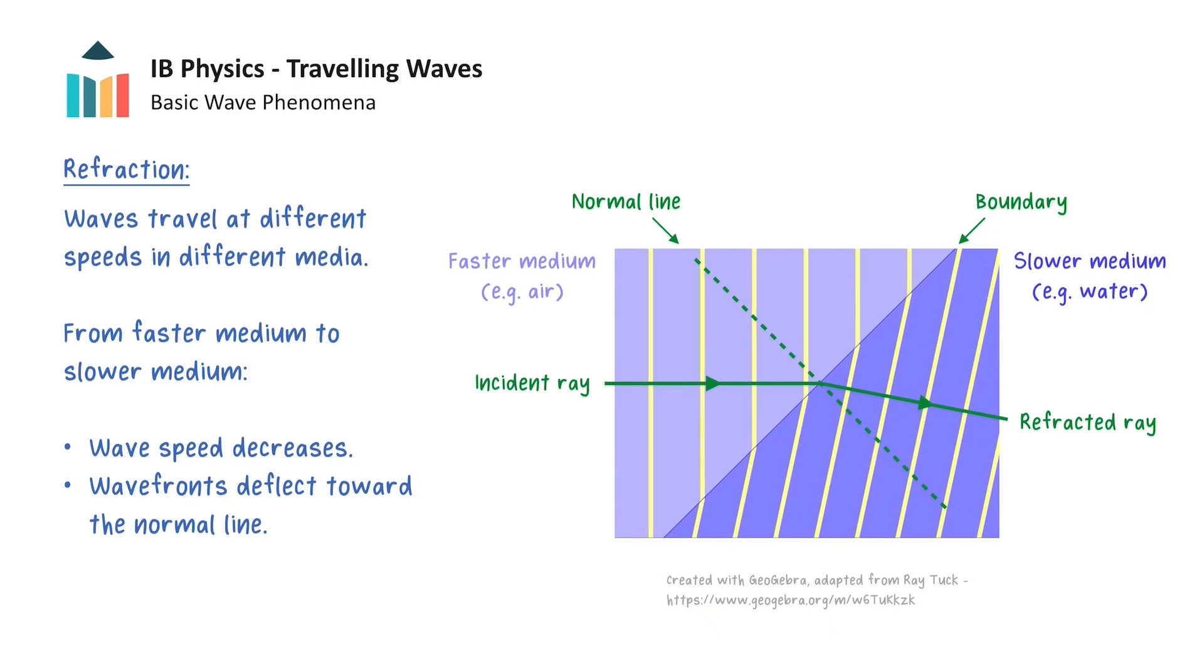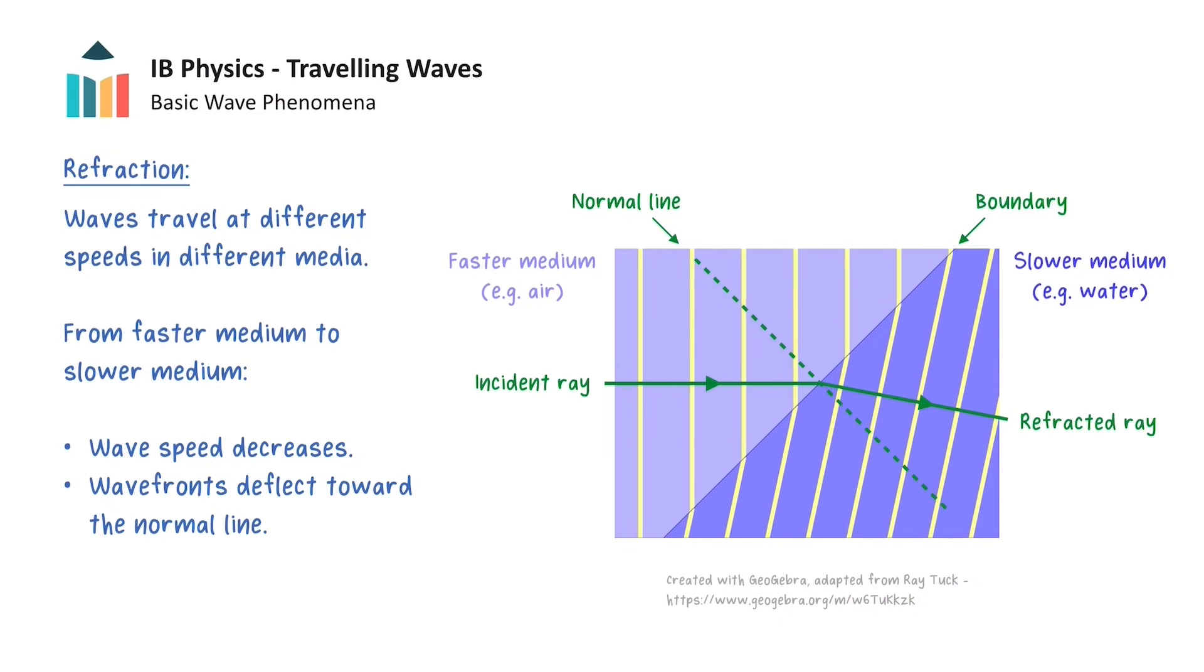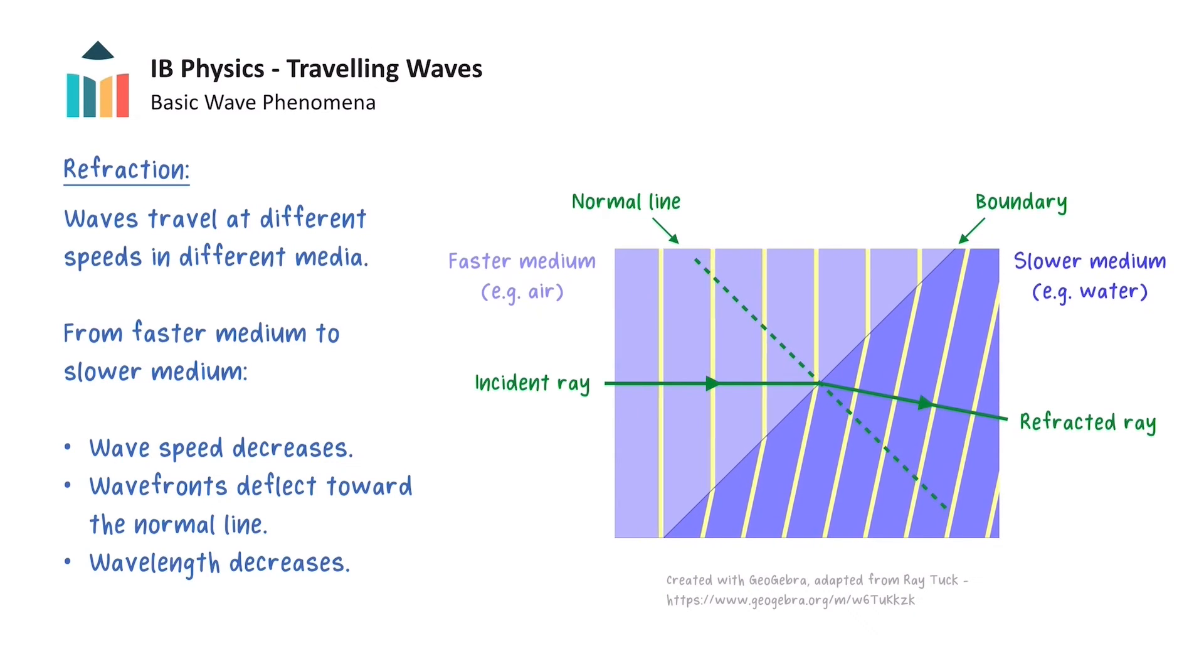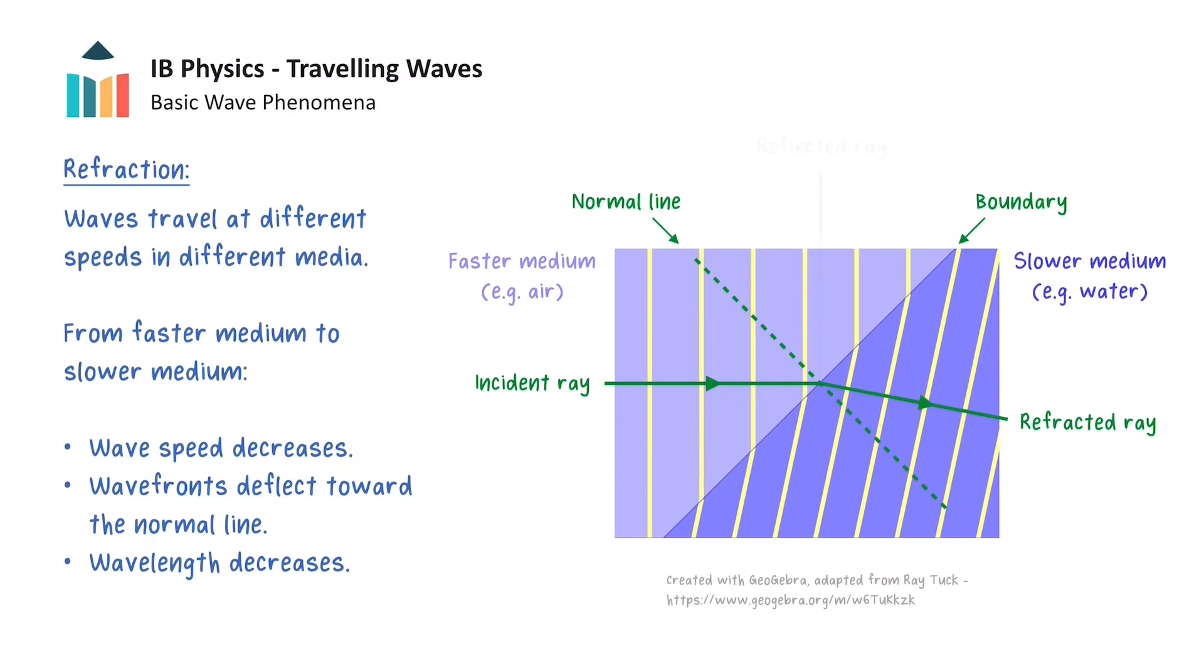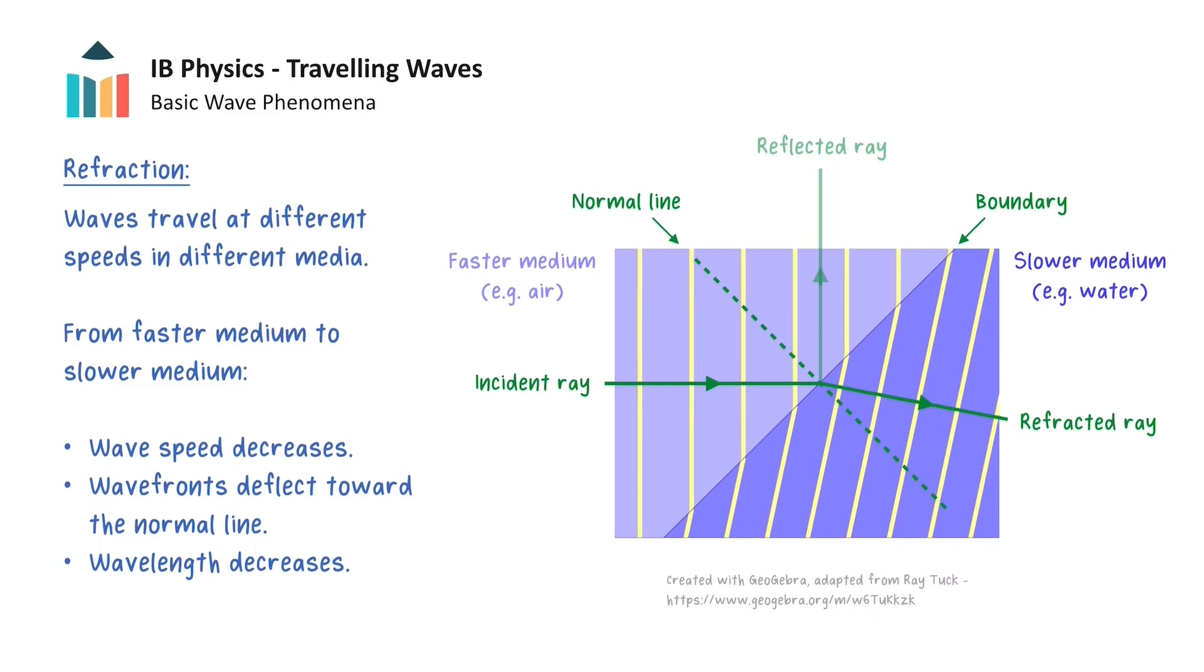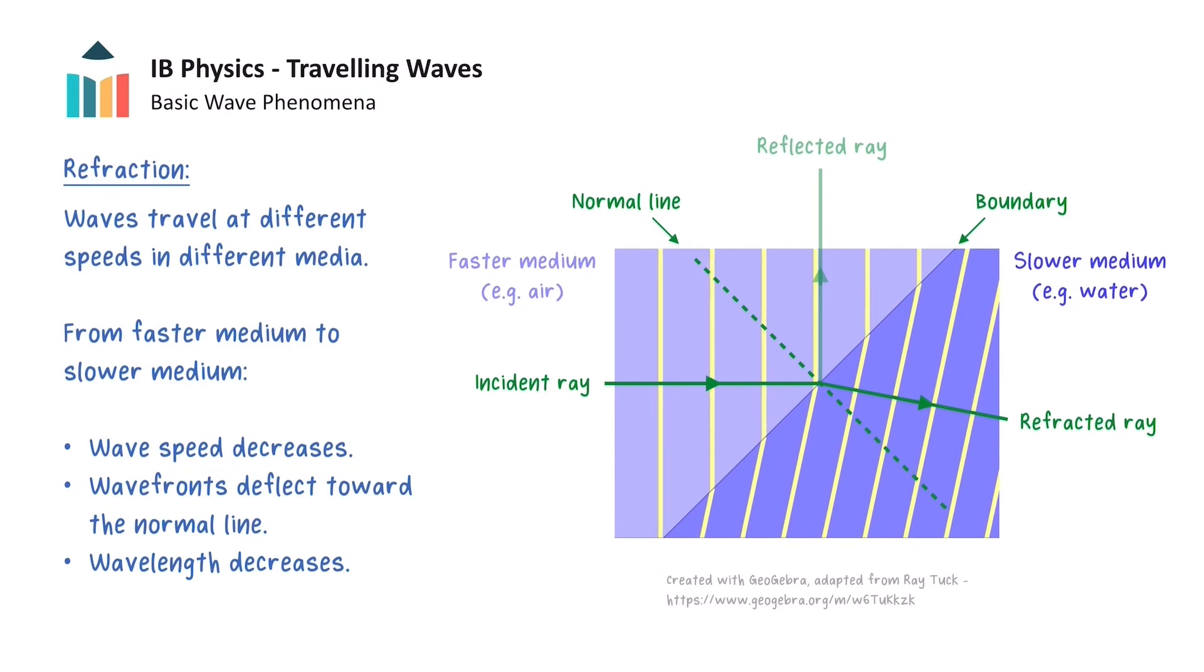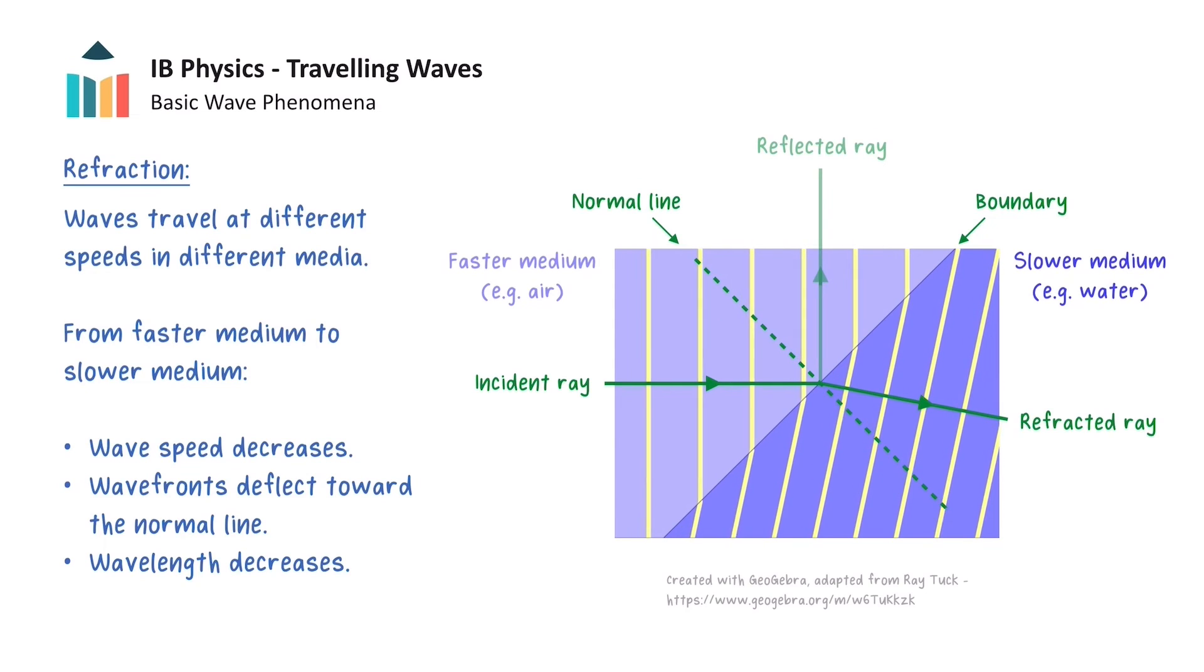Also notice how the wavefronts get compressed as they move into the slower medium, so the wavelength of the wave also decreases after refraction. In most cases, there is both partial reflection and partial refraction when waves are incident at a boundary between two media, so there would also be a reflected ray, but the reflected wavefronts are not shown in this animation.